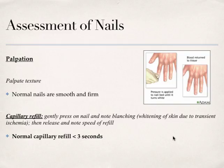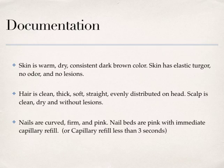For documentation of normal findings, you would write: skin is warm, dry, consistent pink or dark brown color throughout; skin has elastic turgor, no odor, and no lesions noted. For hair: hair is clean, thick, soft, straight, and evenly distributed; scalp is clean, dry, and free of lesions. For nails: nails are curved, firm, and pink; nail beds are pink with capillary refill less than three seconds. If you have any other questions, please let me know.